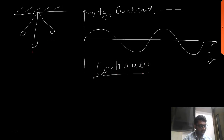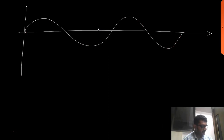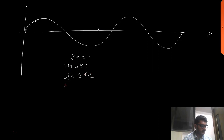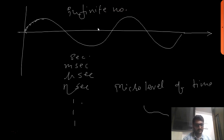It does not happen that at 9 a.m. the signal is here and at 10 a.m. it jumps somewhere else — it continuously goes in time. There is no break in this time. The problem with this sine wave is that it is continuous — there are n number of points on it. It can be in seconds, milliseconds, microseconds, nanoseconds, and we can go down to the micro level. We can record, in fact, an infinite number of points in this signal.